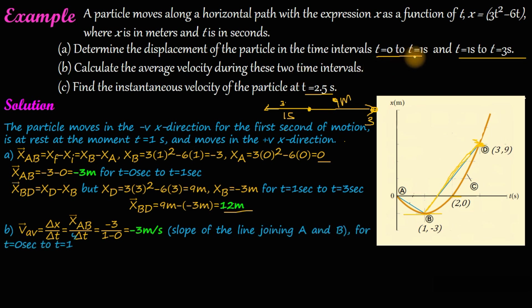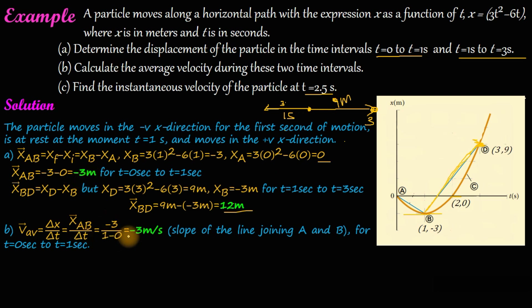The average velocity is equal to delta x divided by delta t. Delta x is equal to 0 minus 3 meters. So we have minus 3 meters divided by delta t of 1 minus 0, which equals minus 3 meters divided by 1 second, equal to minus 3 meters per second.